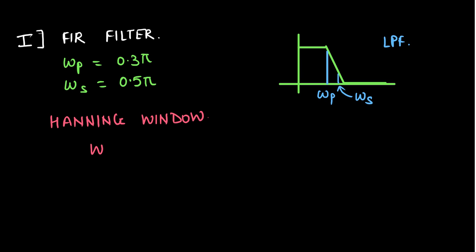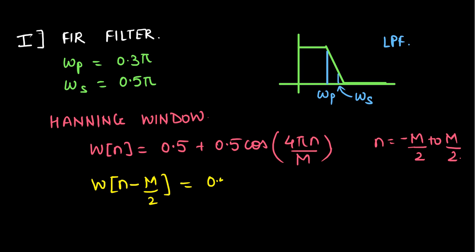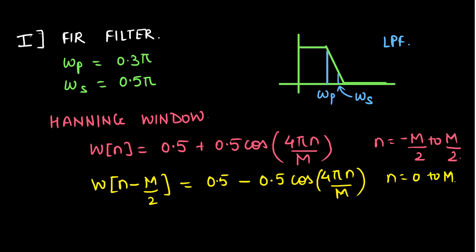The Hanning window is given as W(n) = 0.5 + 0.5*cos(4*pi*n / M), where n varies from minus M/2 to M/2. Since this is non-causal, we introduce a delay and consider W(n minus M/2) = 0.5 - 0.5*cos(4*pi*n / M), which is valid for n from 0 to M and equal to 0 otherwise.